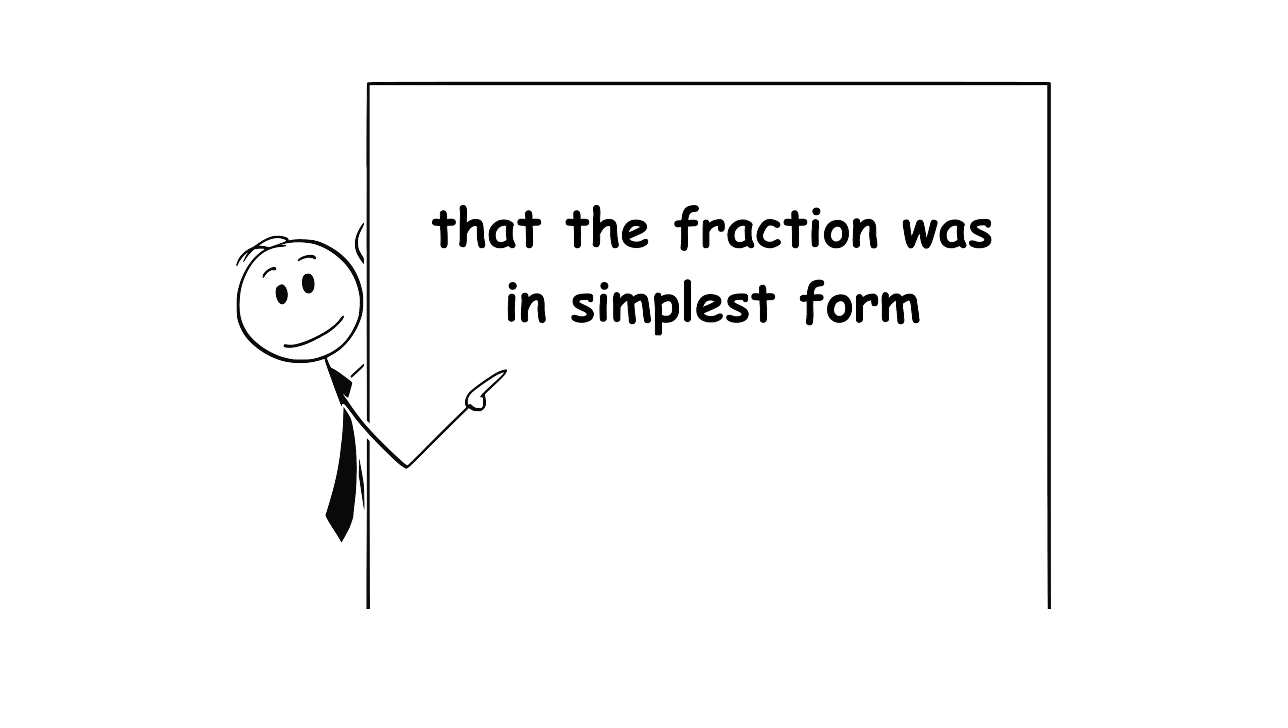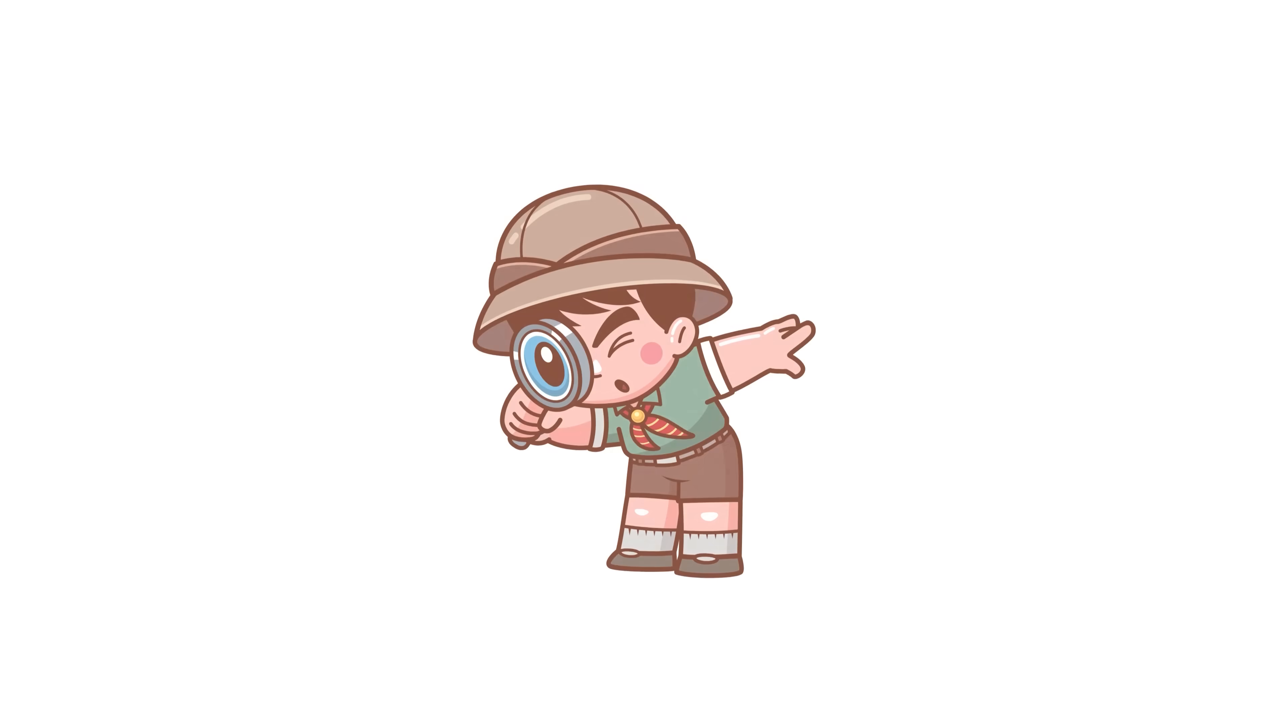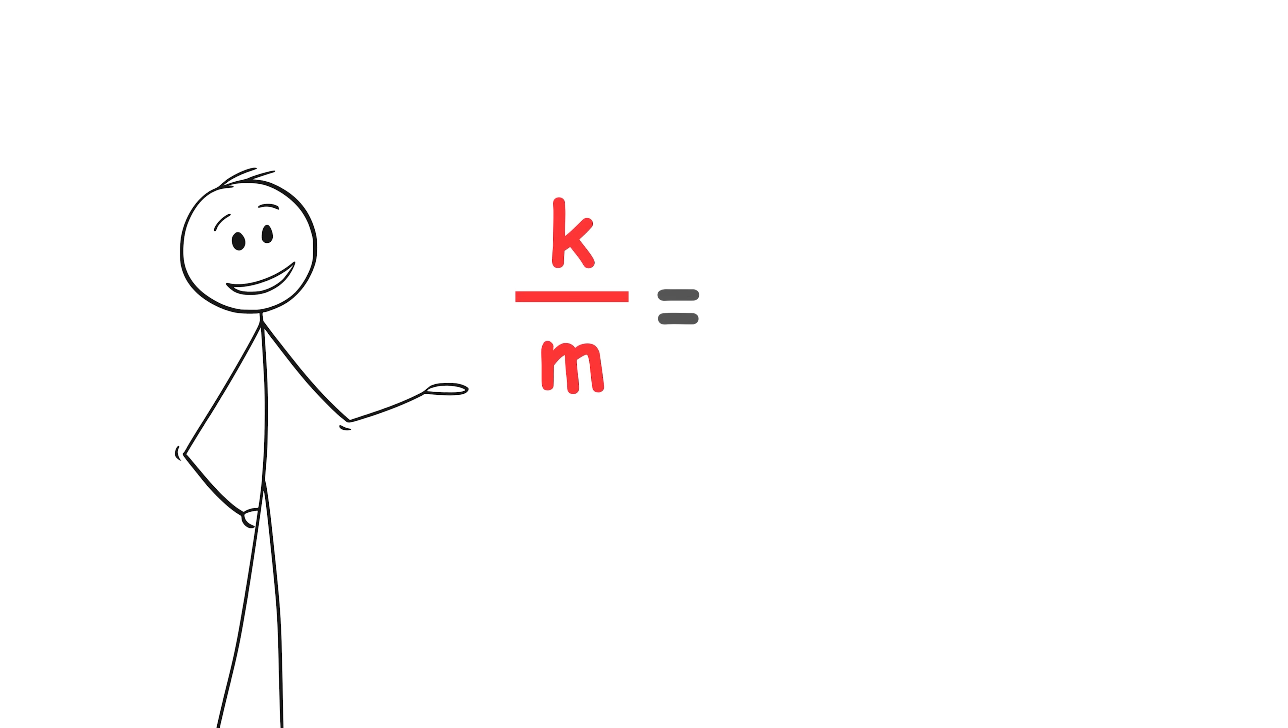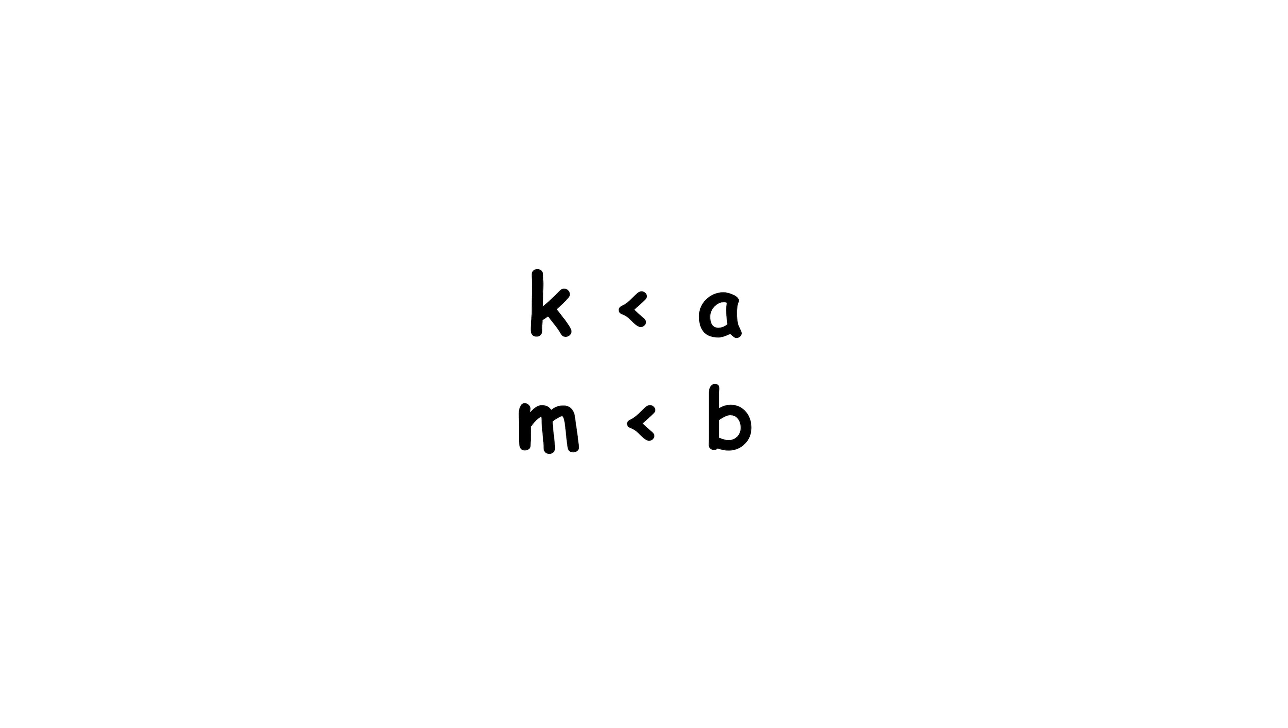However, this is not a contradiction this time, as we had not assumed that the fraction was in simplest form. Instead, if we bring back the equality square root 2 equals a over b, notice that we can divide both the top and bottom of the fraction by 2, and this will give us another ratio of natural numbers that also represents square root 2. The natural numbers will be smaller this time, since dividing any positive number by 2 gives you a smaller number.